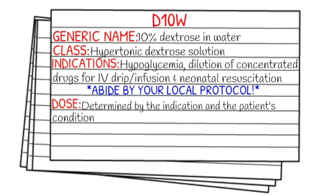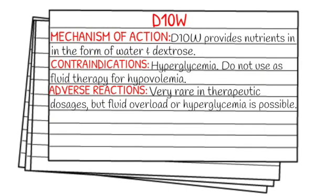The dose is going to be solely determined by the indication and also the patient's condition. The mechanism of action of D10 is that it provides nutrients in the form of water and dextrose — and dextrose is basically just sugar.